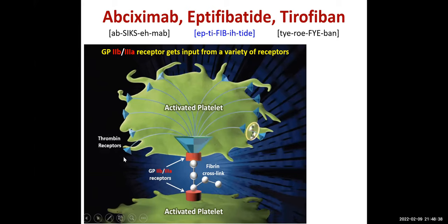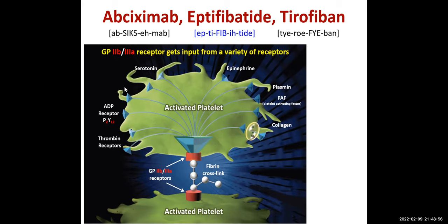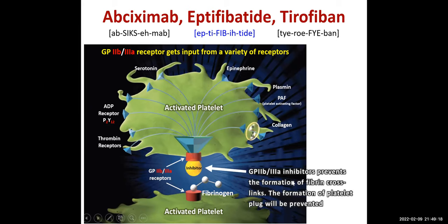When you give inhibitors — abciximab, eptifibatide, tirofiban — they block GP2B3A so platelets will not be able to aggregate. The end result is prevention of platelet aggregation. GP2B3A inhibitors prevent the formation of fibrin cross-links and the formation of a platelet plug. Abciximab is a MAB — a monoclonal antibody, specifically a chimeric monoclonal antibody. Eptifibatide is a peptide; tirofiban is a non-peptide. Both block the site on GP2B3A that binds to fibrinogen or fibrin.